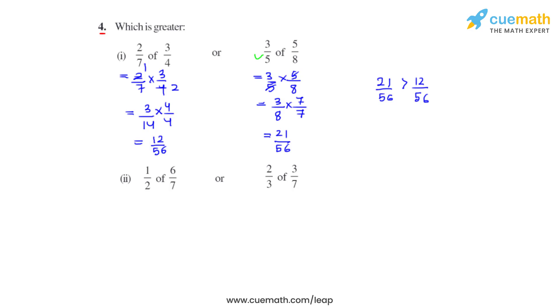Similarly, doing the second part of the same question, we have to simplify these first. 1 over 2 of 6 over 7, replacing 'of' with a multiplication symbol. We can cancel out 2 and 6. 2 ones are 2, 2 threes are 6. We get the product as 3 over 7.